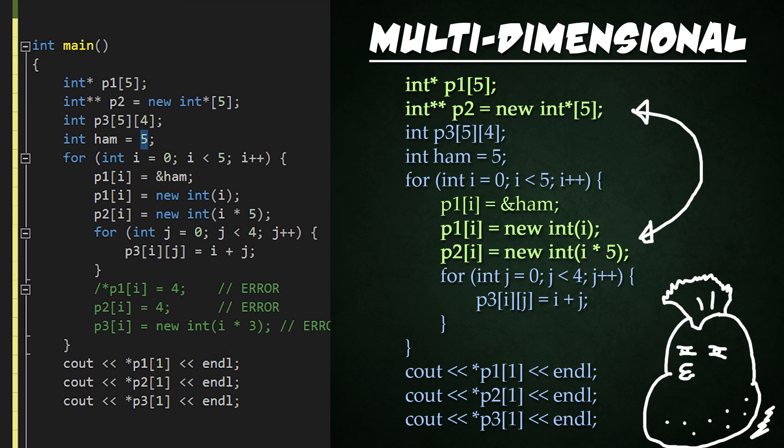All right, so then we create a loop that's going to loop over five times. And what we're going to be doing is setting the values within it for these pointers and arrays. So pointer one is going to be set to the value at the address ham. And then after that, we're just going to kind of throw that value out and then set it to a dynamically allocated value of i using the new int. And then P2, which again is pointer of pointers, we're going to set the pointer within that first item equal to a newly allocated value of i times five.